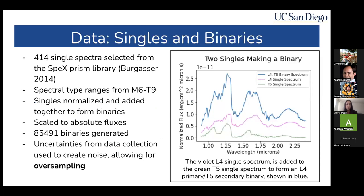The training set will identify the most accurate of these decision trees, and the test set is then used to determine the accuracy or precision of the trees. The random forest then outputs its classification and the accuracy of that classification. The data I'm putting into the random forest consists of 414 single star spectra selected from the SpeX PRISM library, ranging from M6 to T9. They are normalized and added together to form binaries. Taking a look at the graph, you'll see two single star spectra — an L4 and a T5 — and these added together form the L4-T5 binary, plotted in blue, which seems to be brighter.